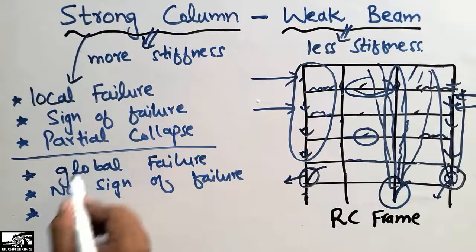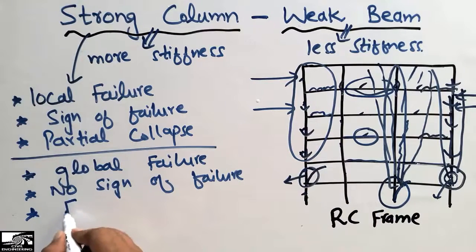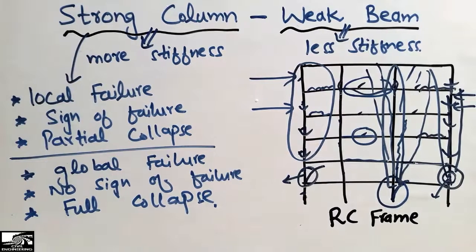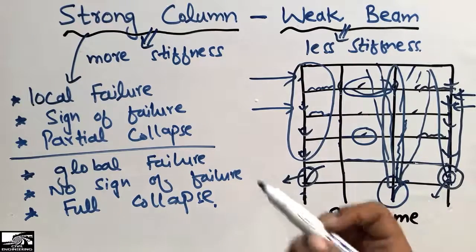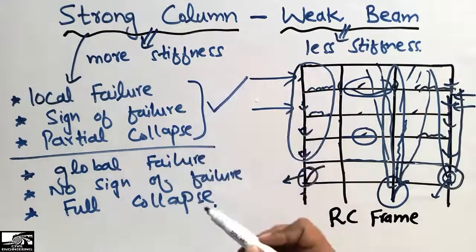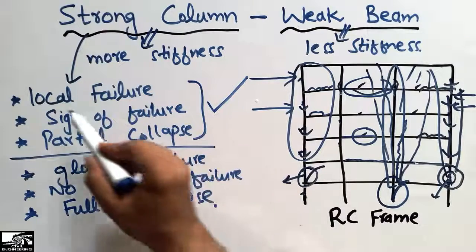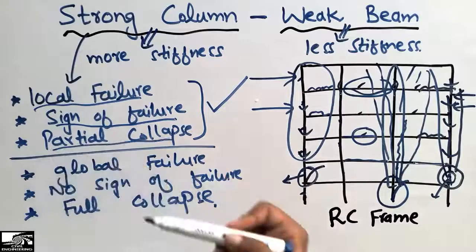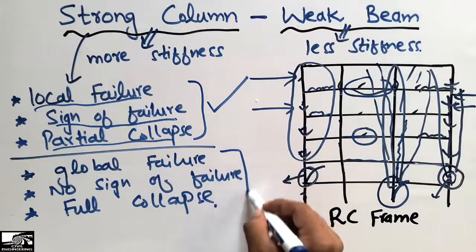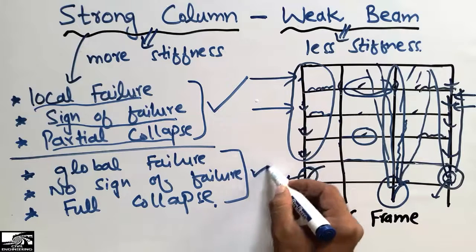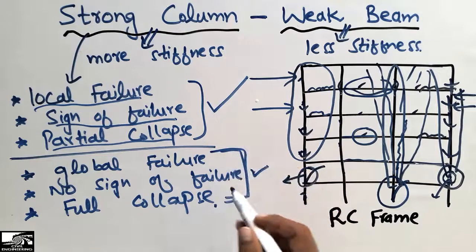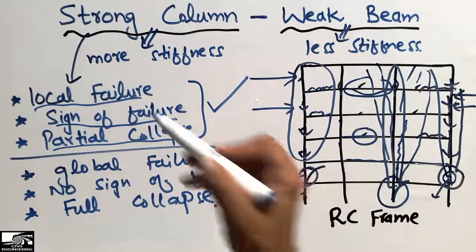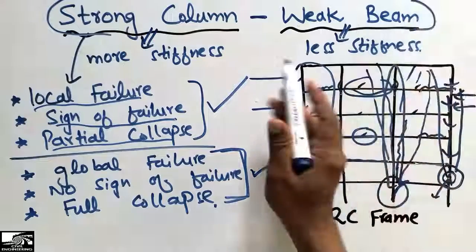In the weak column and strong beam case, there is full collapse of the structure. When you are doing earthquake design, you must provide the strong column and weak beam to get local failure only. We should know the sign of failure, and there should be only partial collapse. Weak column and strong beam leads to total collapse, which is not good for RCC structures.